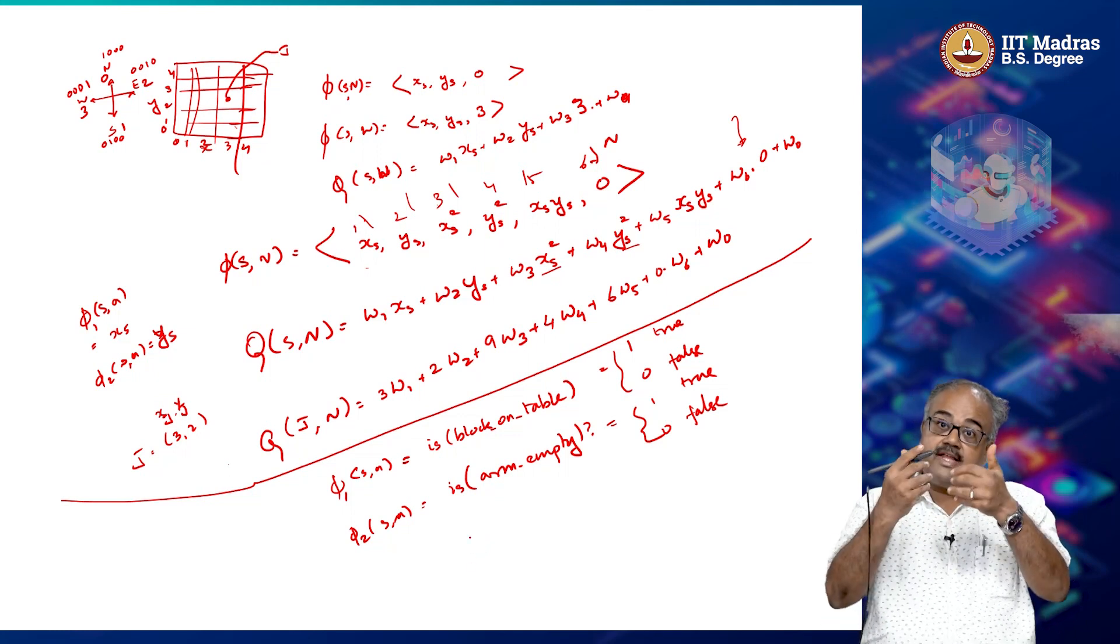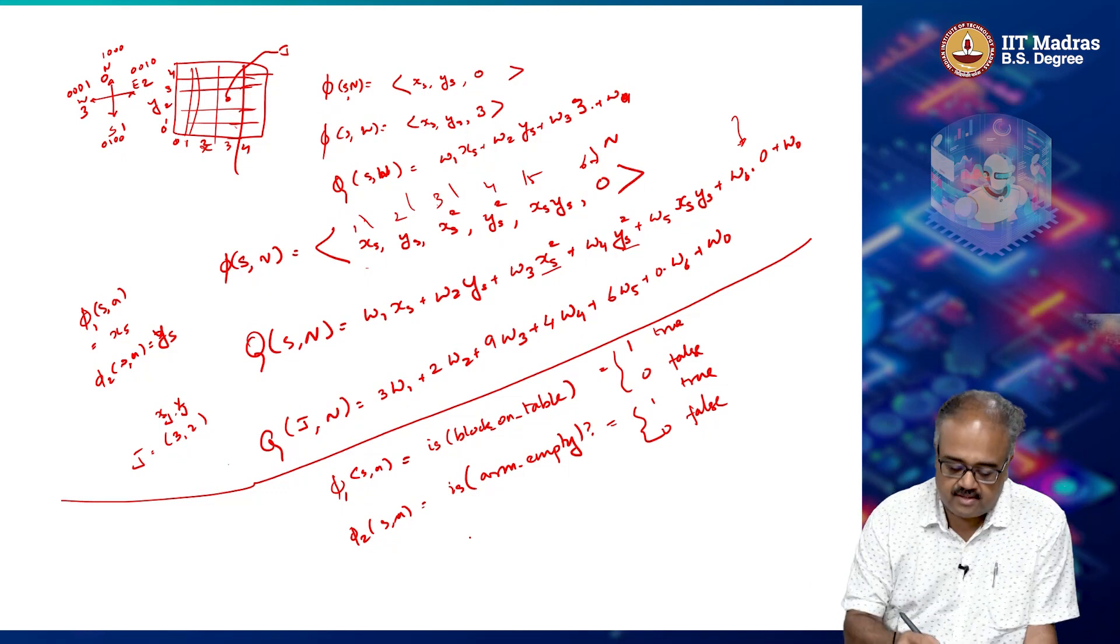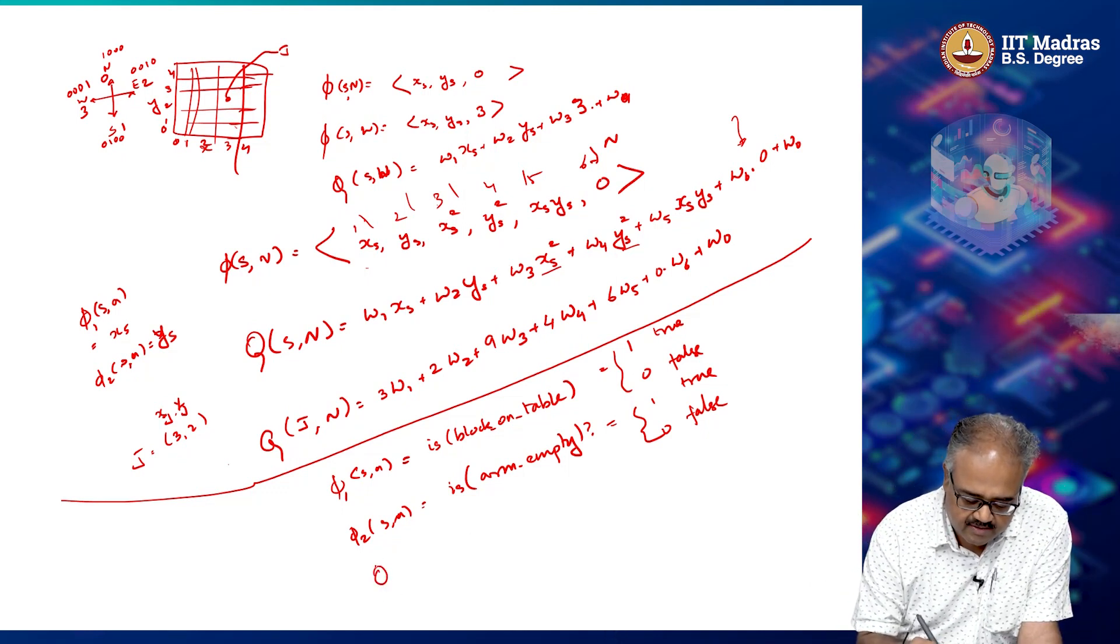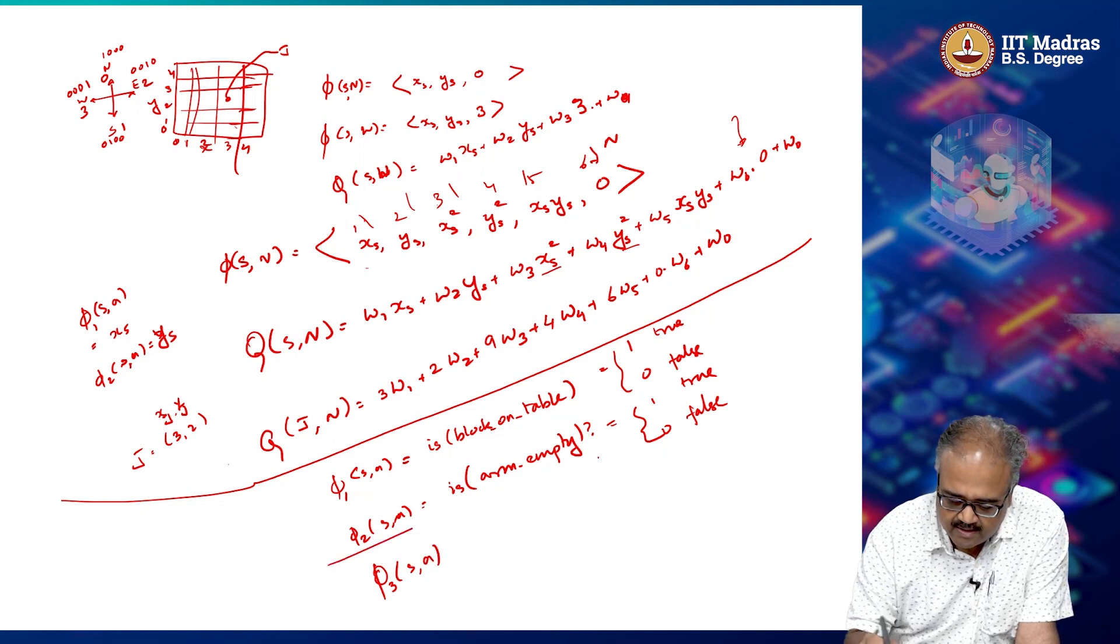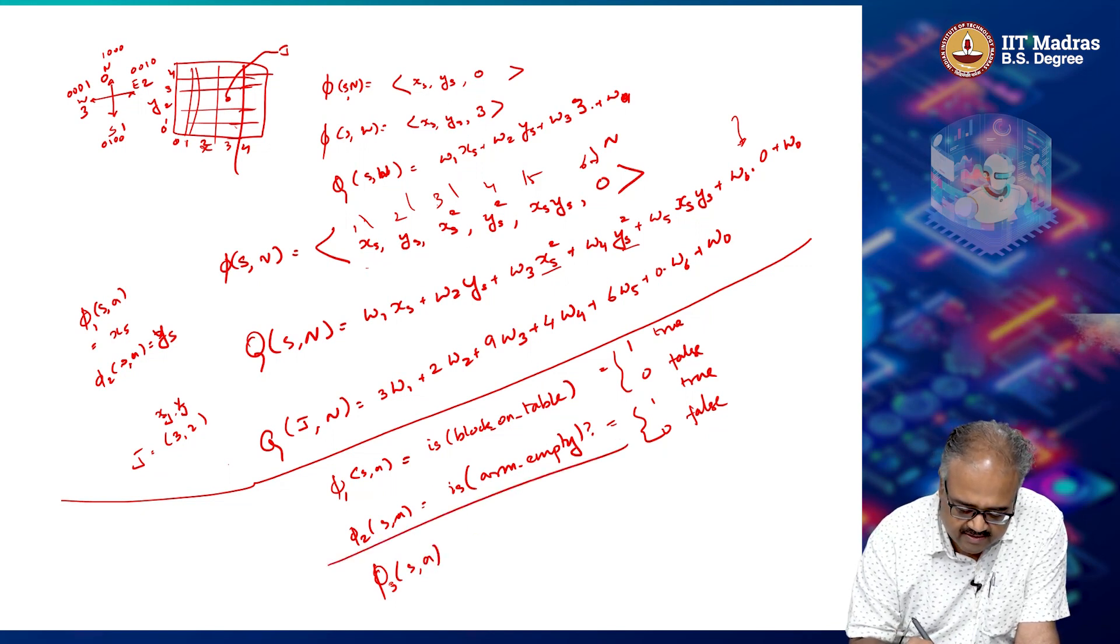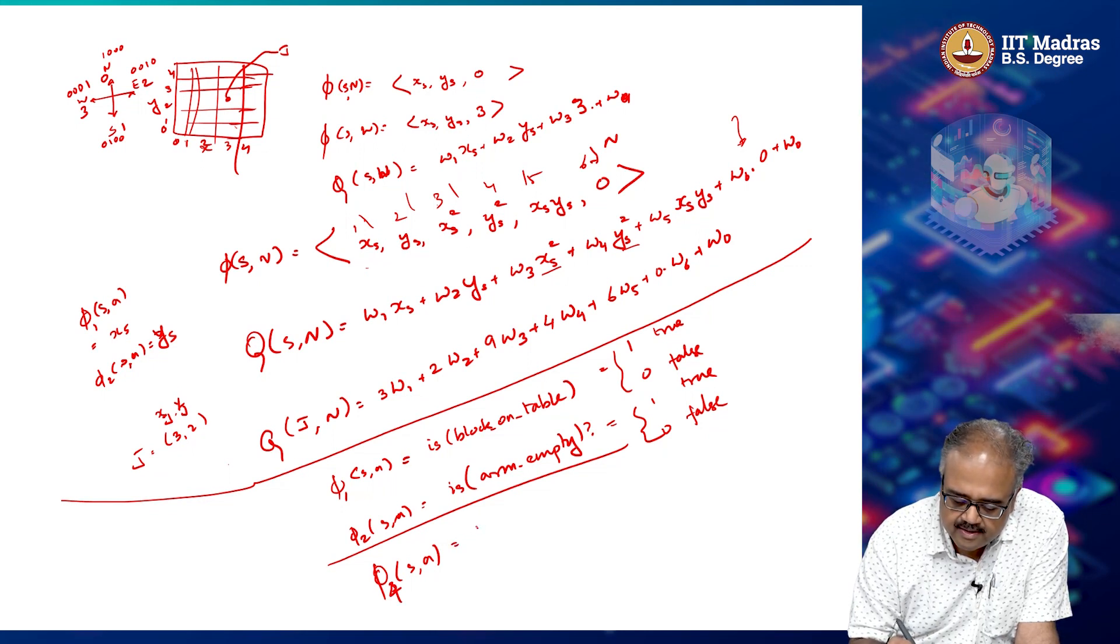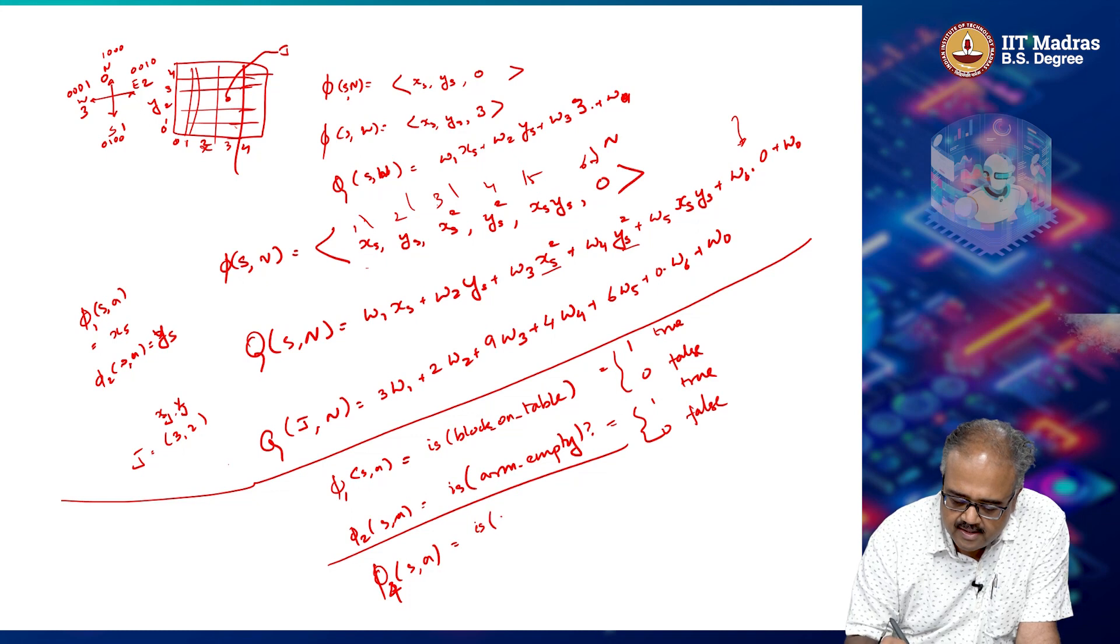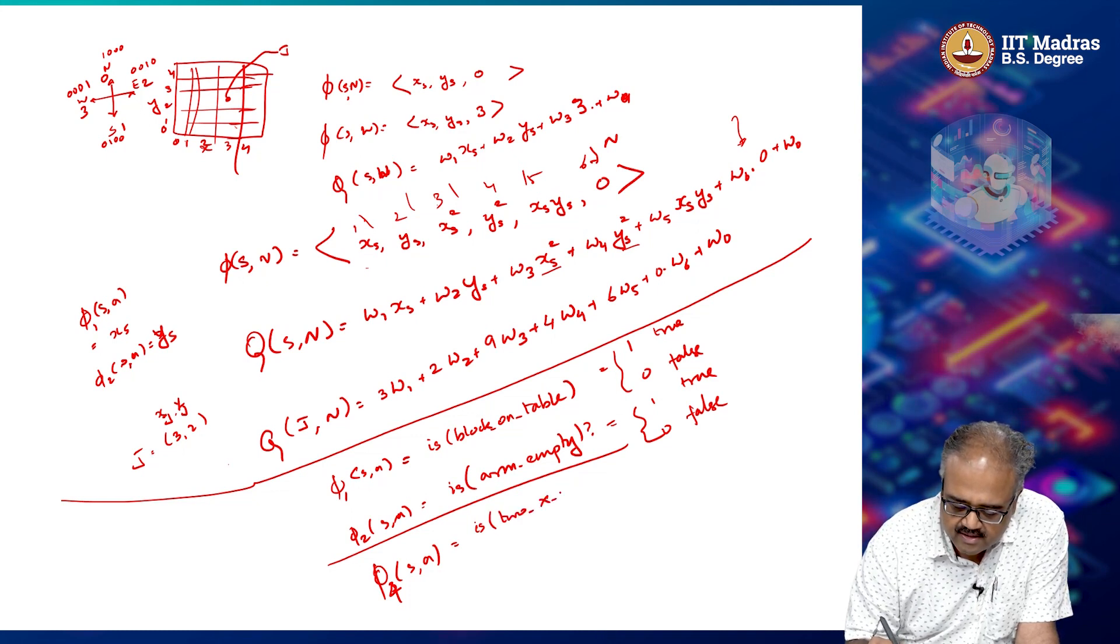So like that, for each of these phi 1, phi 2, phi 3, I can construct many complex solutions. For example, sorry, for example, phi 3 in some other problem, not the same robot problem. Something like that, say phi 4 of s comma a is or this 2x in row.